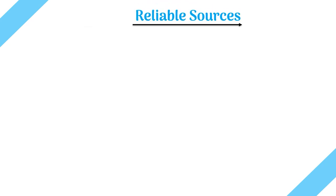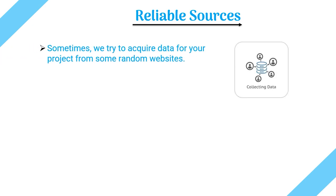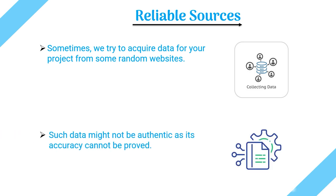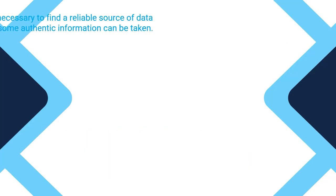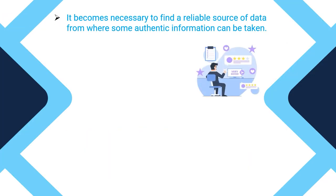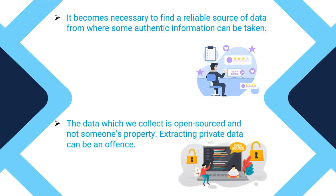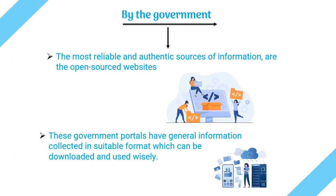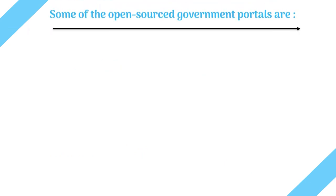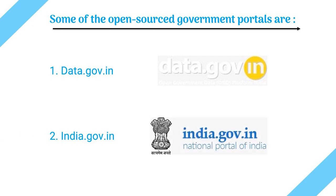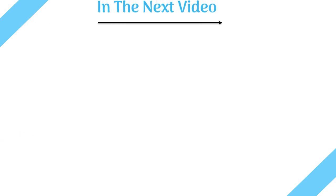One important thing: collected data must come from authentic and reliable sources. If you use random websites, the data may not be accurate or authentic. It is also necessary to ensure that the data we collect is open-sourced and not someone's private property — extracting private data can be an offense. Some of the most reliable sources are open-source websites hosted by governments, such as data.gov.in and india.gov.in, which provide data in suitable formats that can be downloaded and used.